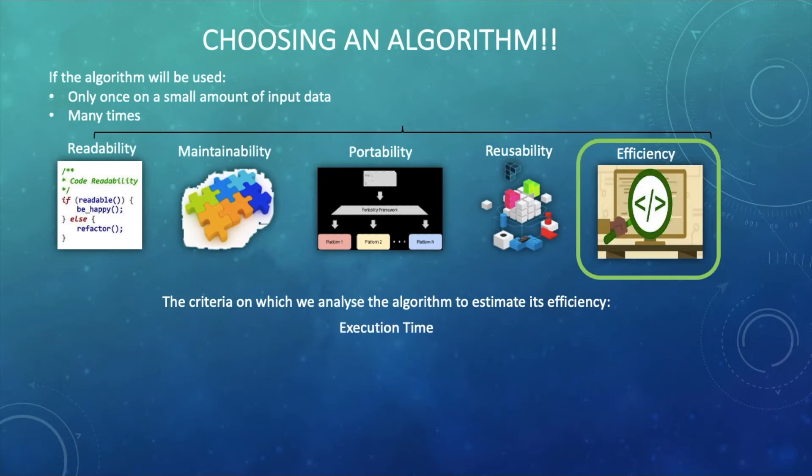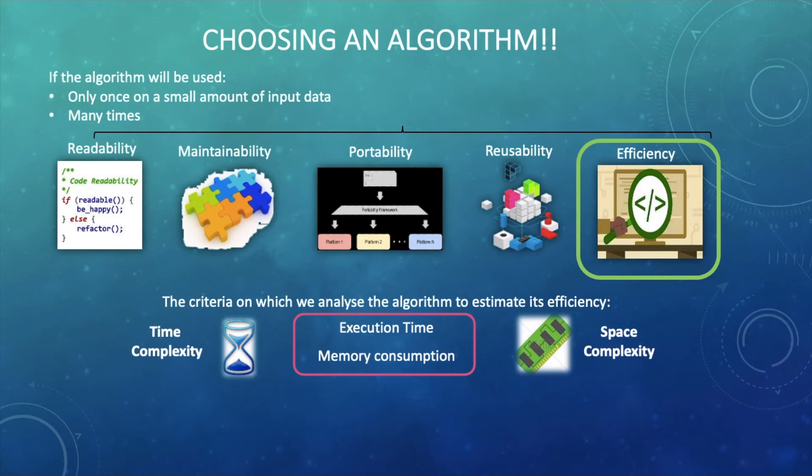First one is the execution time to check if the algorithm is too long and too time consuming or it is very fast and provide result quickly. Second is its memory consumption that we can also see as the space it requires while executing the algorithm. These are the most important criteria on which we analyze most of our algorithms and are also known as time and space complexity. We will discuss about these two topics in more depth in the upcoming videos as time and space complexity is the most important and the basic concept for strong foundation of data structure and algorithms knowledge.